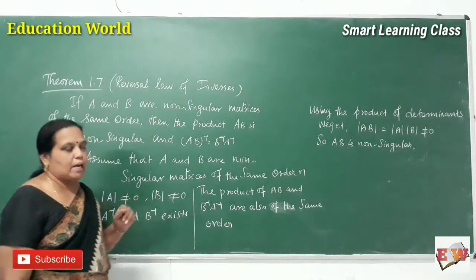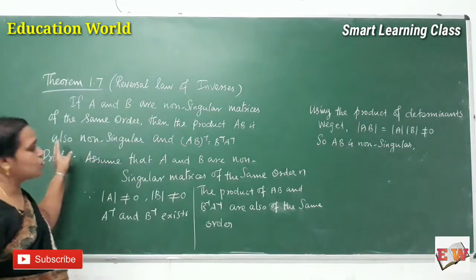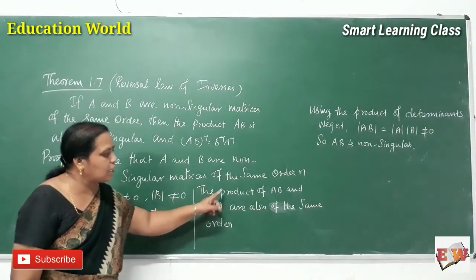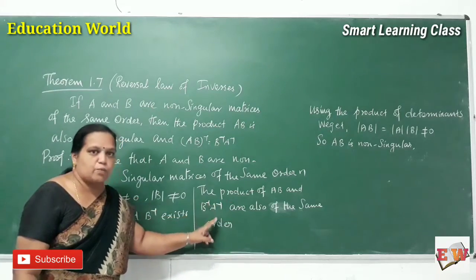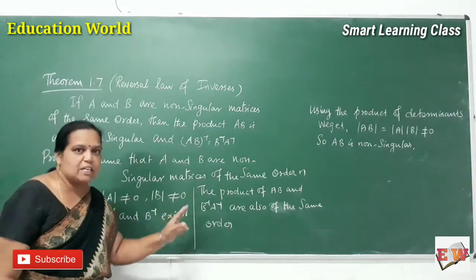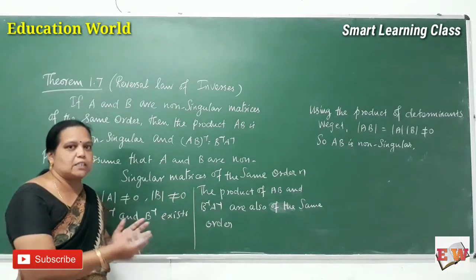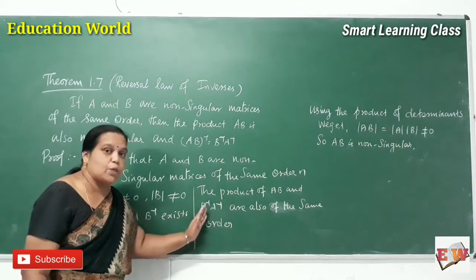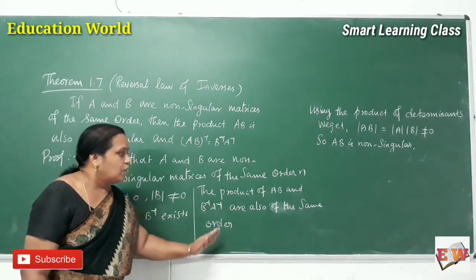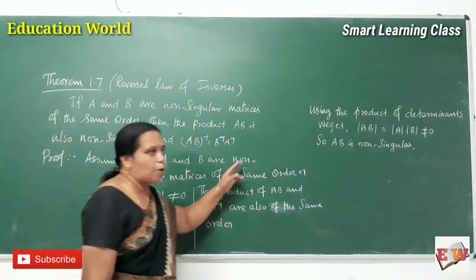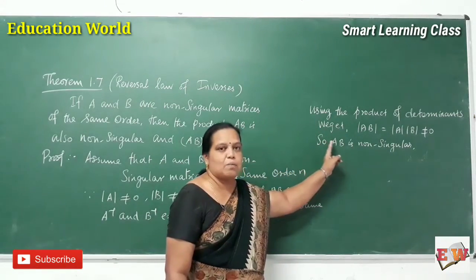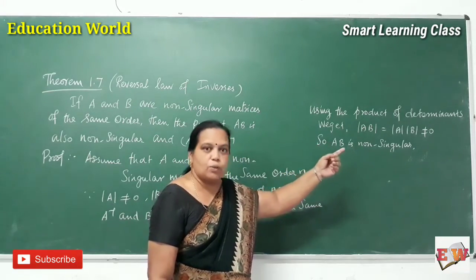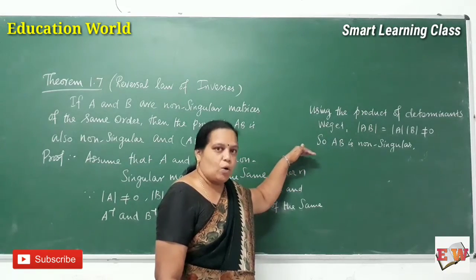Then, the second point they have given: the product AB is also non-singular. The product AB is non-singular means the product AB inverse equals B⁻¹A⁻¹ — reversal law of inverses. Reversal means we interchange AB into BA. Now, using the product of determinants, the determinant of AB equals the determinant of A times the determinant of B, which is also not equal to 0. So AB is non-singular.